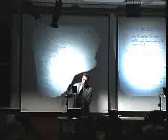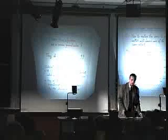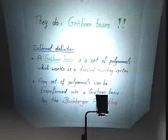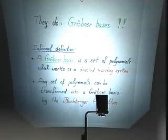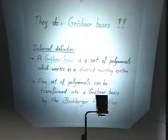This is an example of a Gröbner basis. An informal definition: a Gröbner basis is a set of polynomials that works as a directed rewriting system — a system of transformations guaranteed to successively improve things. Any set of polynomials can be transformed into such a set by an algorithm called the Buchberger algorithm, and that's the one that generalizes the three well-known algorithms I started out with.